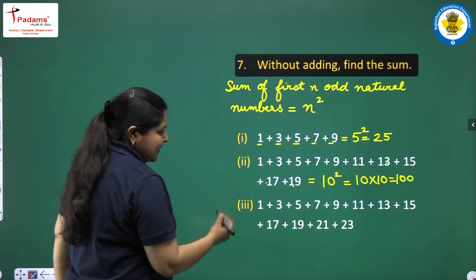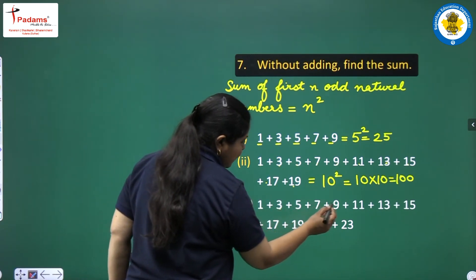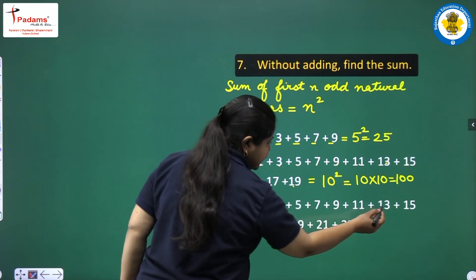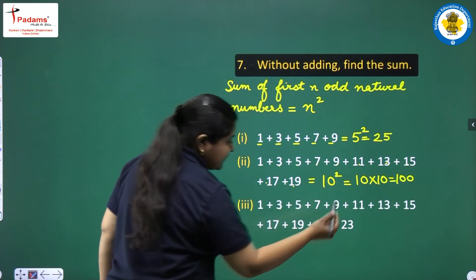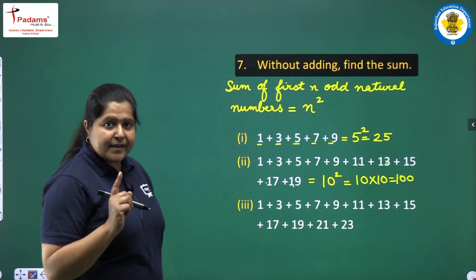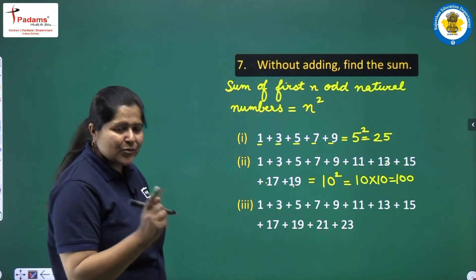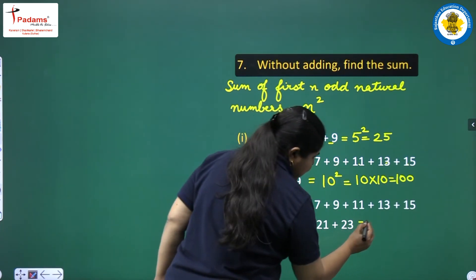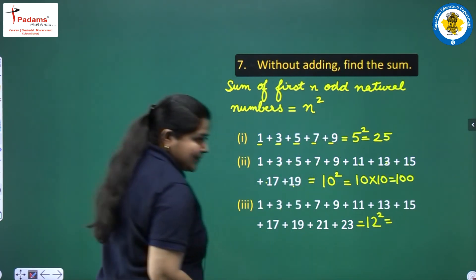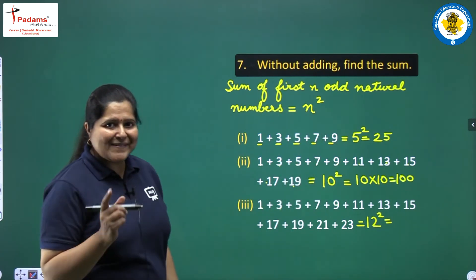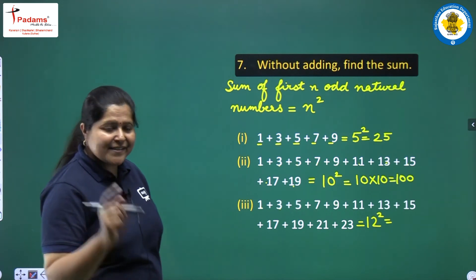Again, count the numbers: 1, 2, 3, 4, 5, 6, 7, 8, 9, 10, 11, 12 — they are 12 odd numbers. So the sum will be equal to 12 squared. I hope you have learnt your squares. 12 squared is 144.